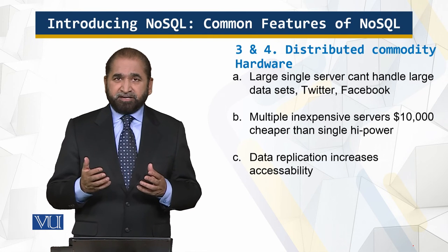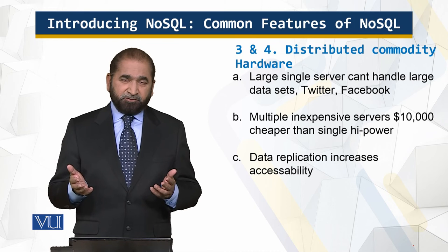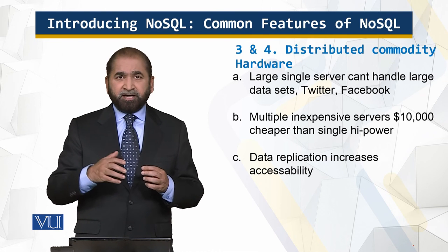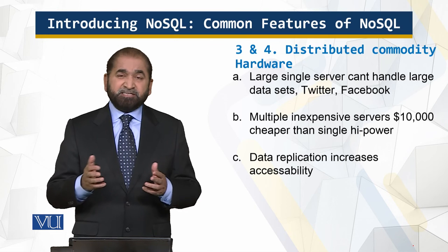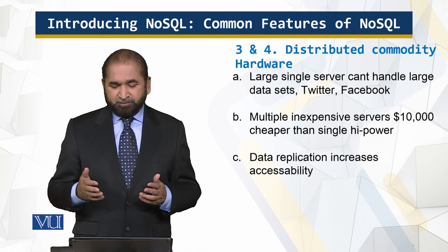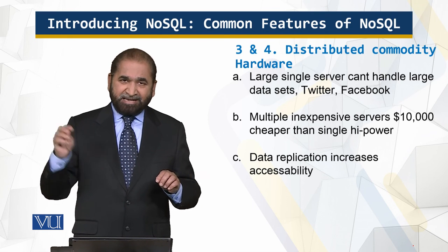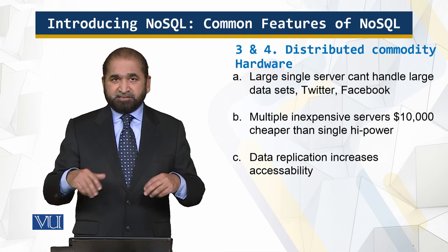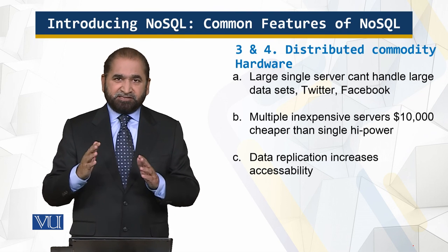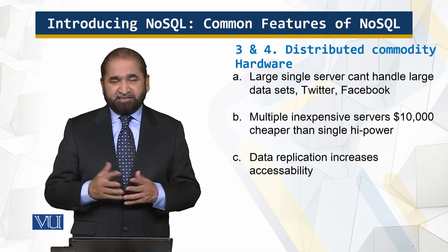NoSQL databases run on distributed commodity hardware — instead of a large single server which has to process hundreds and thousands of Twitter tweets and Facebook posts, you have the flexibility of working with commodity hardware. It's cheaper than specialized hardware, costing like $10,000 US dollars, with multiple machines. When data is replicated across those machines, those machines can crash, burn, or get out of the system, but there is what is called graceful degradation of the application — it does not just shut down. So these are the common features found in a NoSQL database. That's all for this module.